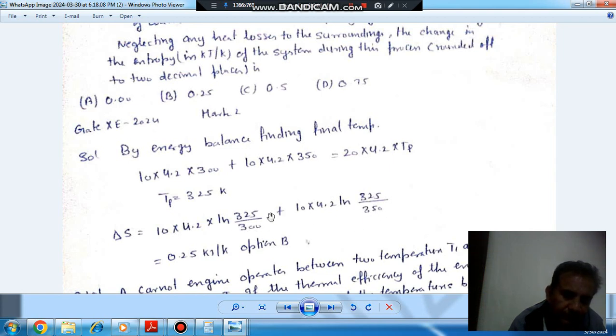So adding these two, we can get total entropy change, which comes out as 0.25 kilojoules per Kelvin. Option B is the answer.